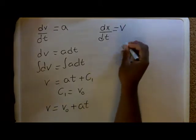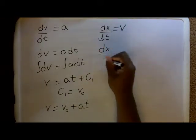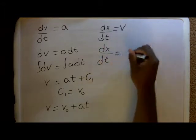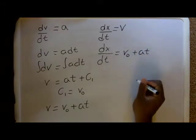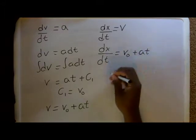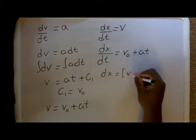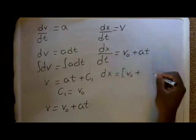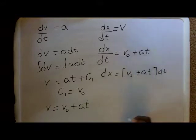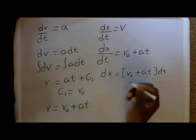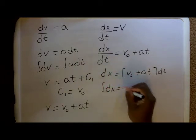So, what we'll do is, we'll change it to dx/dt = v0 + at. We move this over to the side: dx = [v0 + at]dt. I'm just using brackets, so I only have one dt. And, again, we just take the integral of both sides.